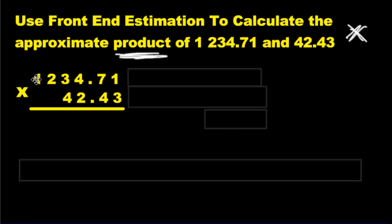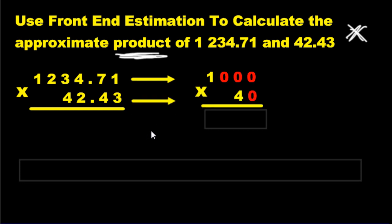So we'll take the first number, keep the one, turn all these to zeros. You've got a thousand decimal zero zero, which is a thousand. We're going to take 42.43 and we're going to turn it into just 40. 40.00 is just 40.